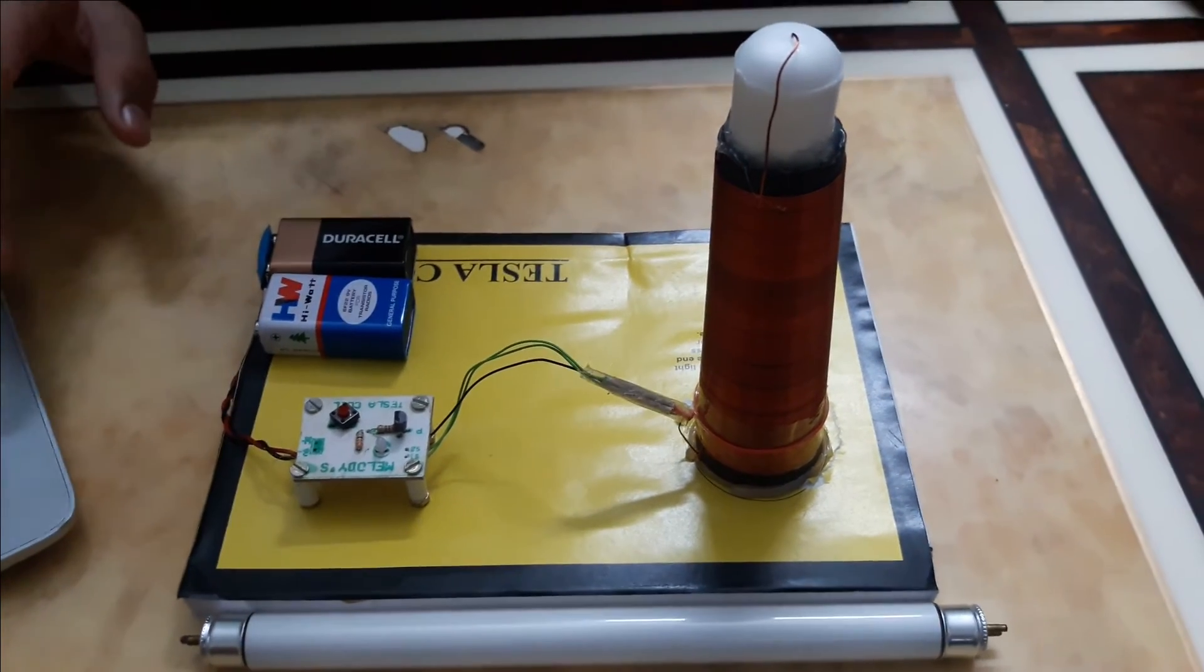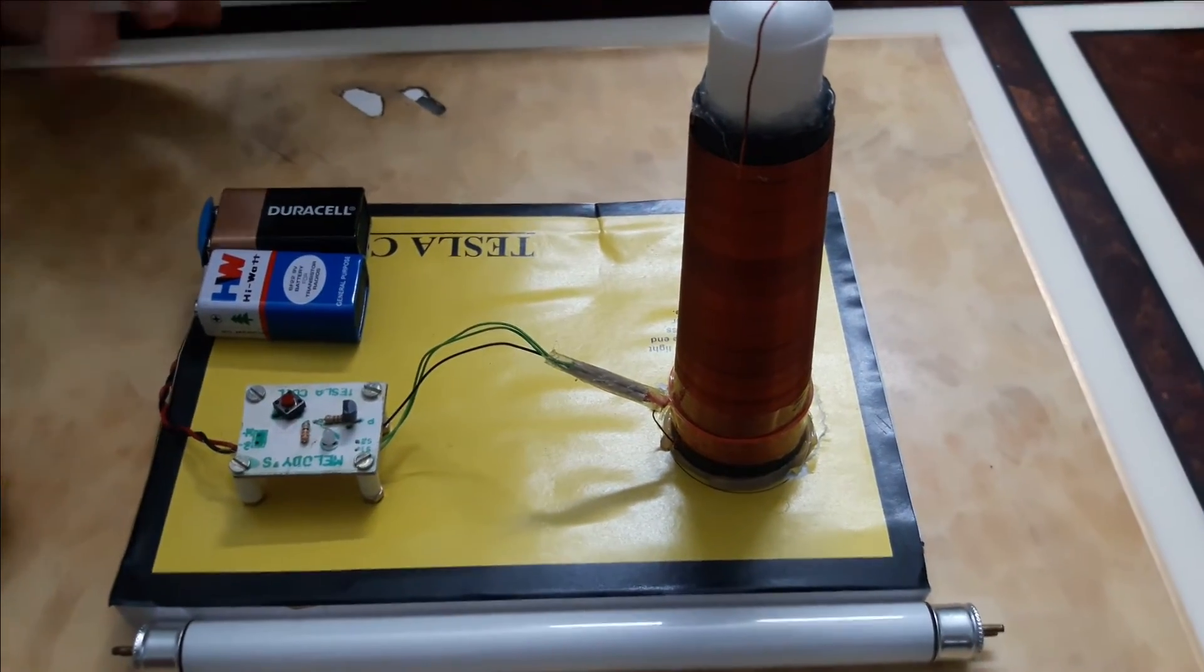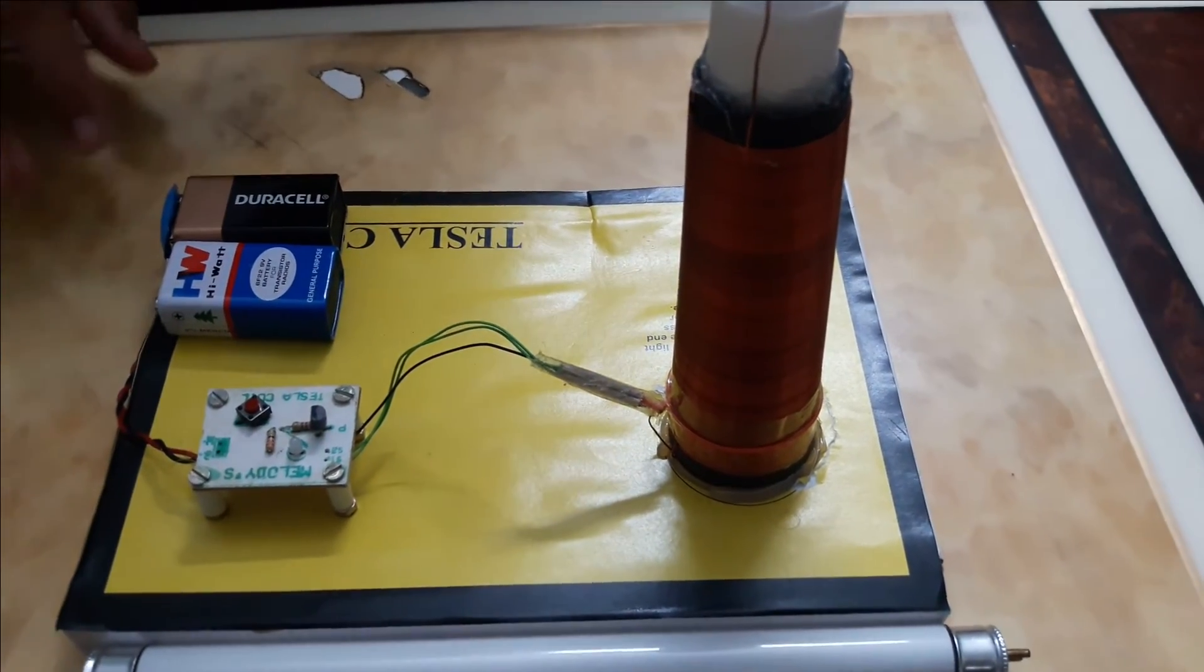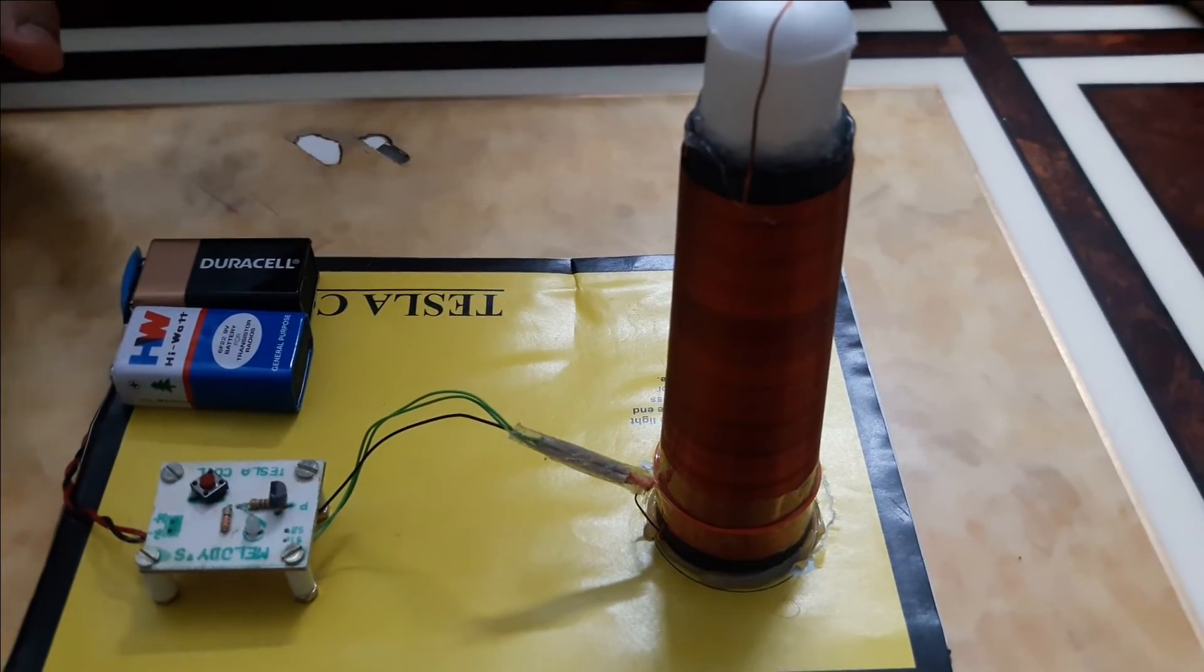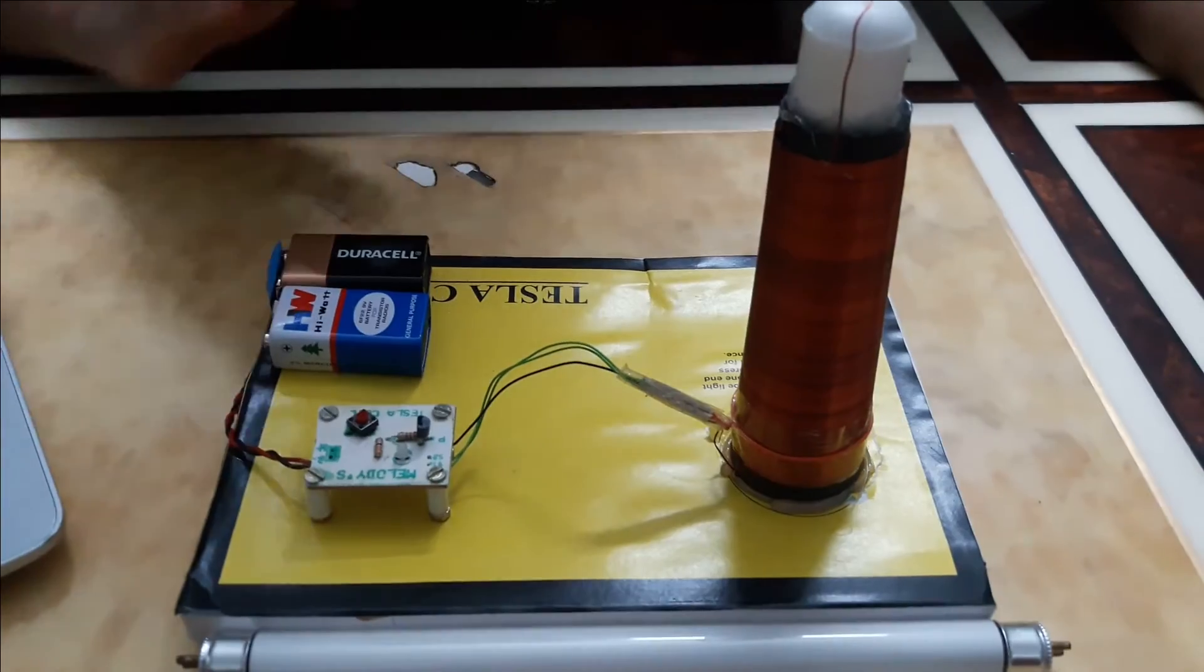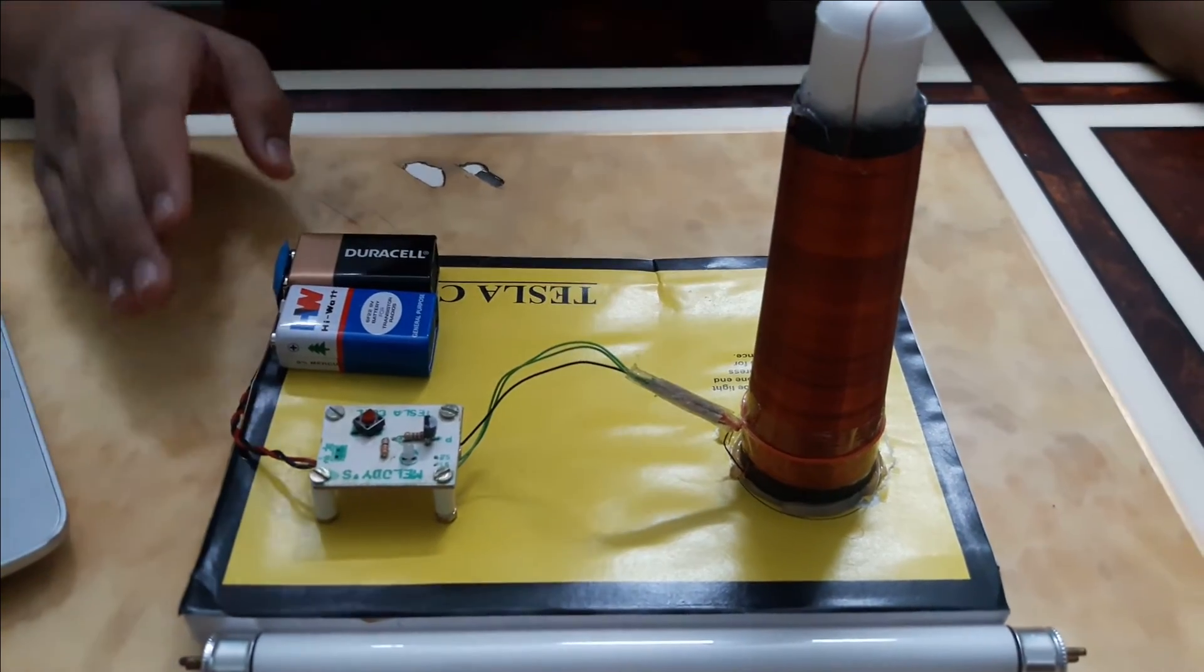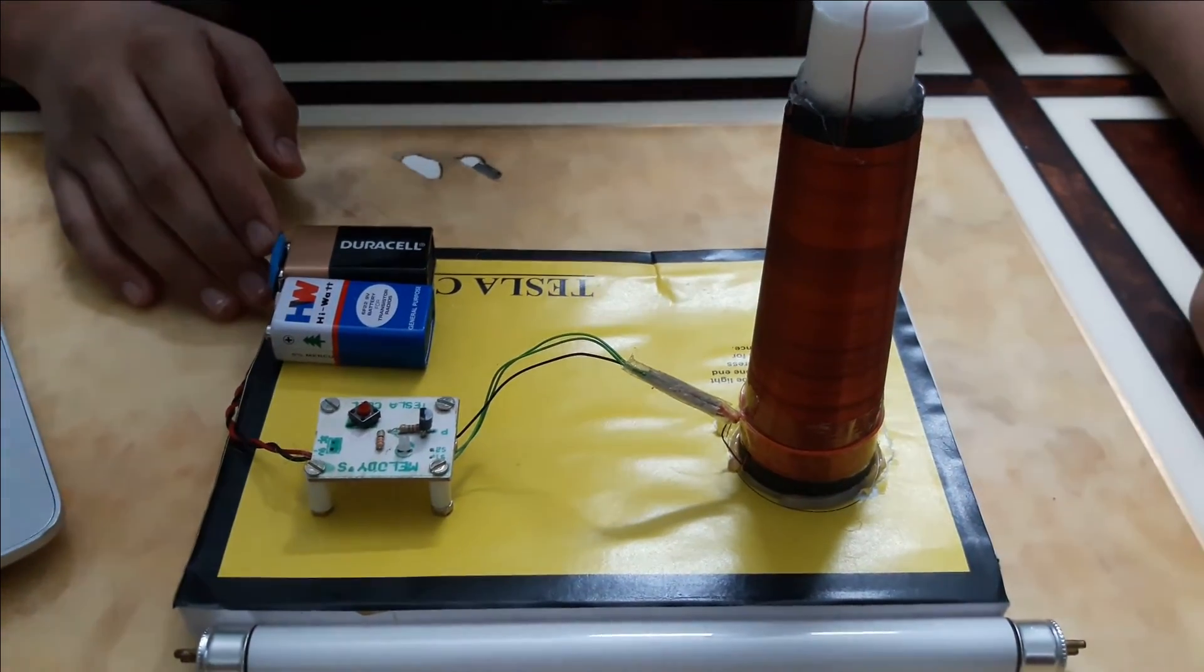This means that whenever the transistor conducts, the current flows through the primary coil. The LED diode and one end of the secondary coil is connected to the base of the transistor to make the circuit oscillate. In this way, the transistor will send the oscillating current to the primary coil.